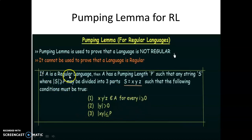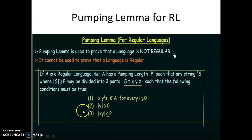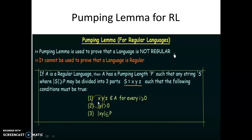There is one language A given. That language is said to be a regular language. If the language is regular, then it has a pumping length P, and a string from that language A whose length is always greater than or equal to P. Then we divide that string into three parts: X, Y and Z. After dividing this string into three parts, that string must fulfill all three conditions at a time. If one condition is true and the other two are false, it is not okay — all three conditions should be fulfilled at a time. Then we can say the language is regular. If one of the conditions fails to fulfill, then we can say the given language is a non-regular language.